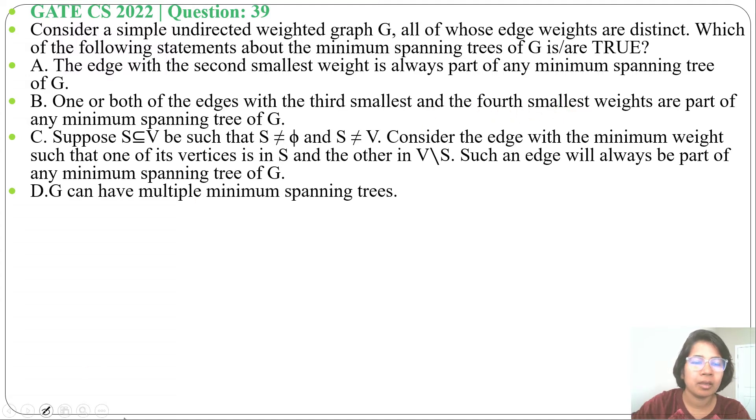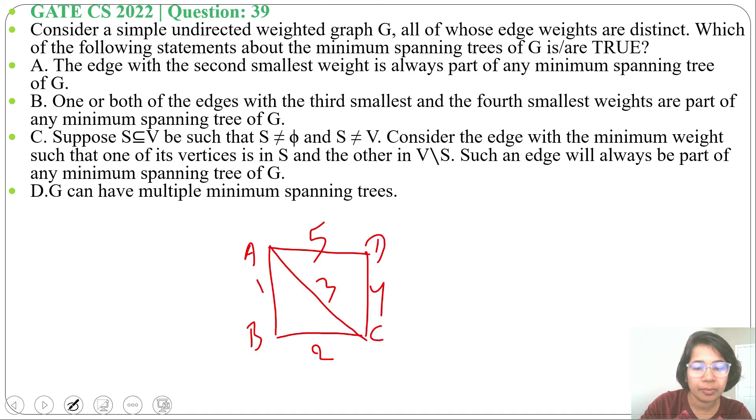Option first statement: the edge with the second smallest weight is always part of any minimum spanning tree of G. Let's take an example. In this graph we want to find minimum spanning tree, so first we will choose the smallest weight, that is AB. Next we will choose BC, second smallest weight.